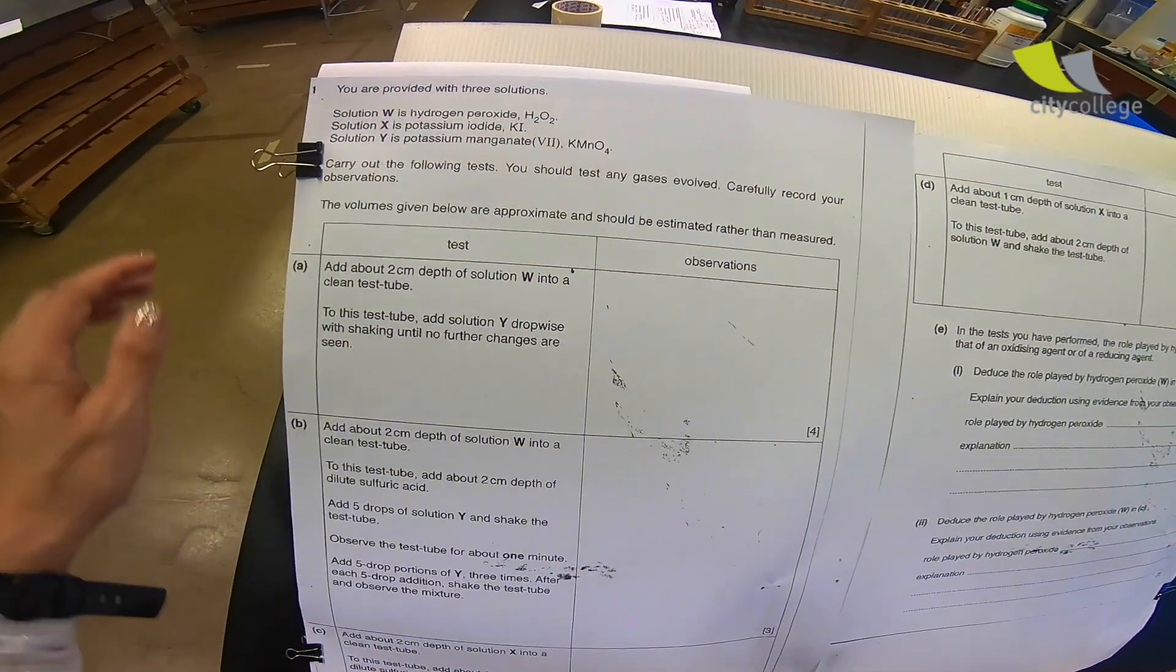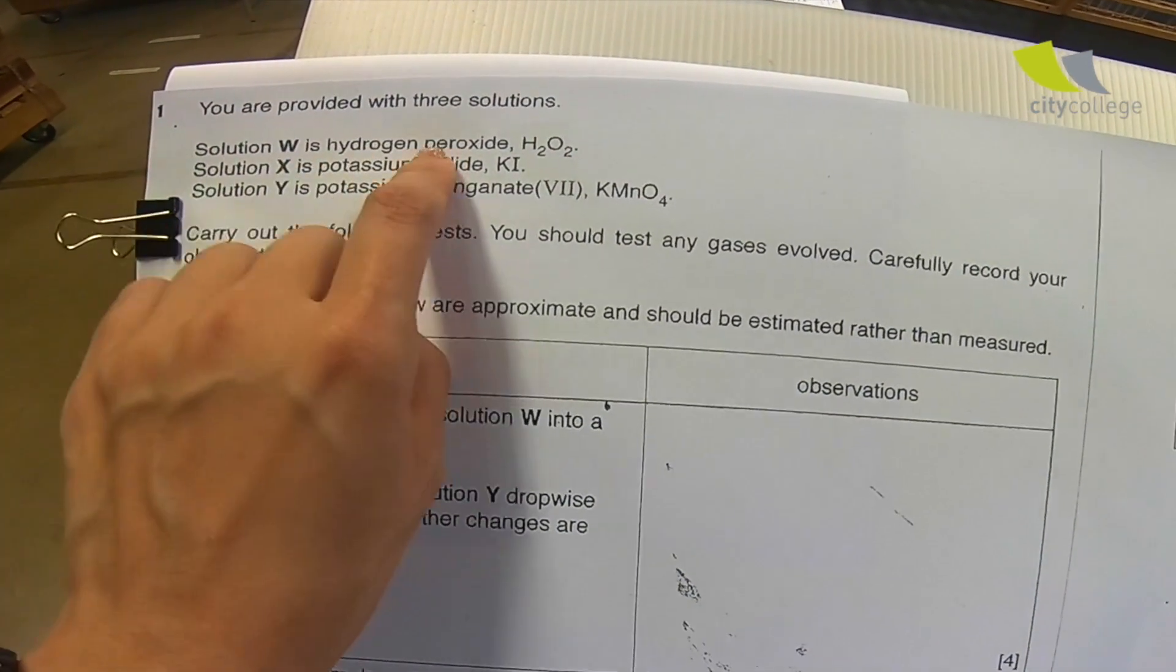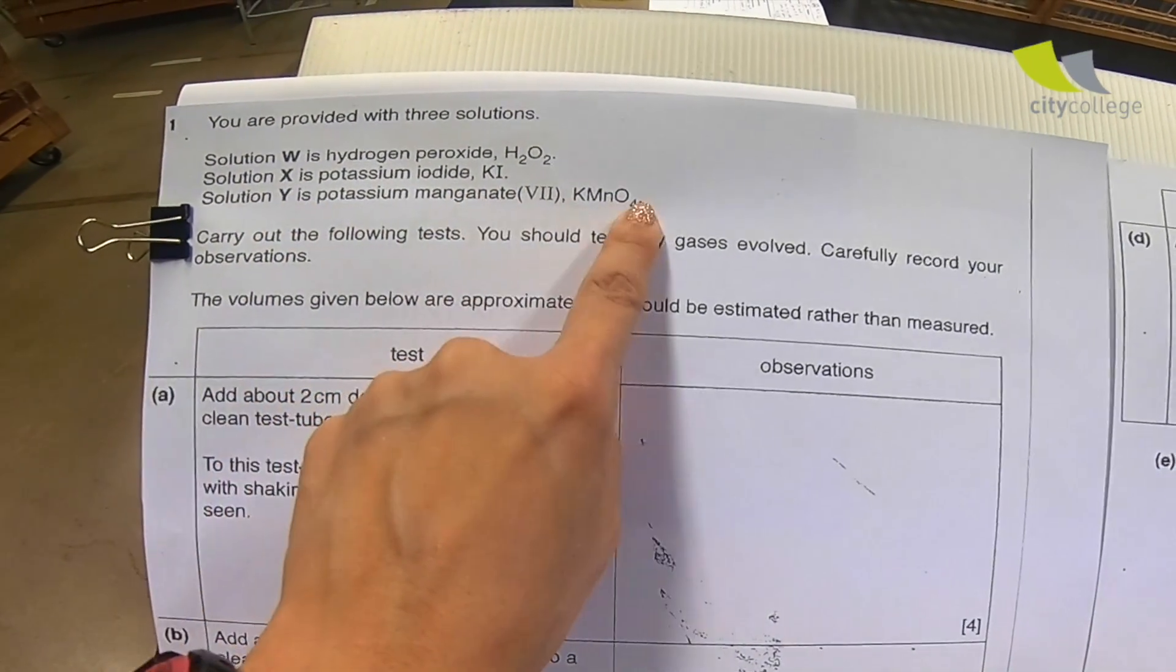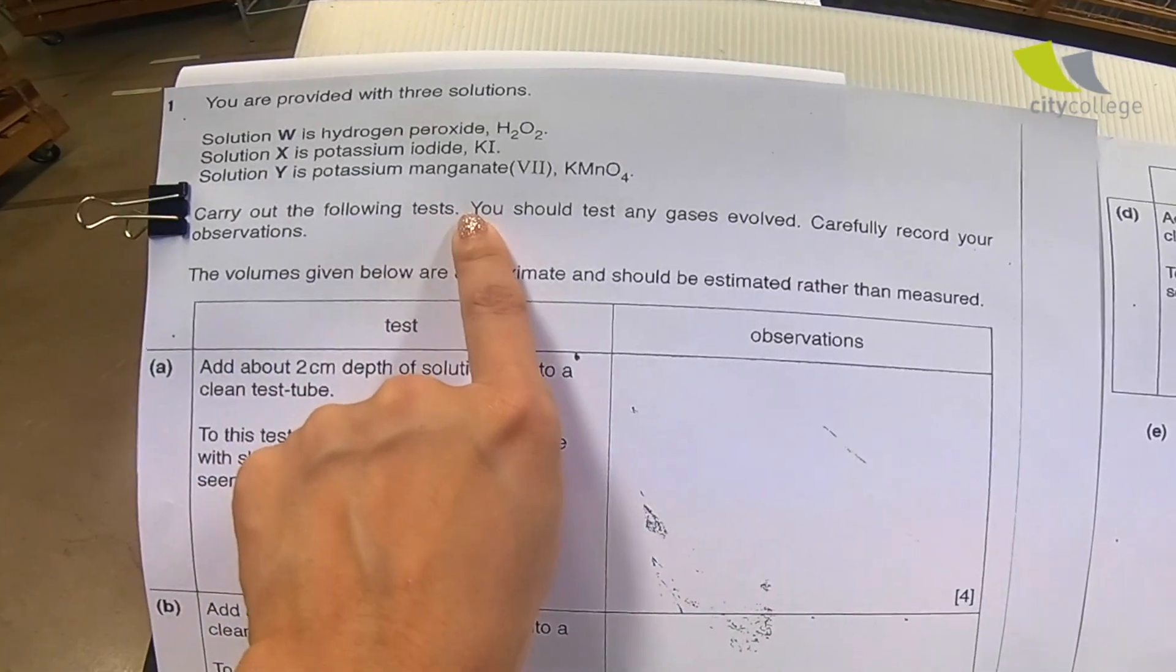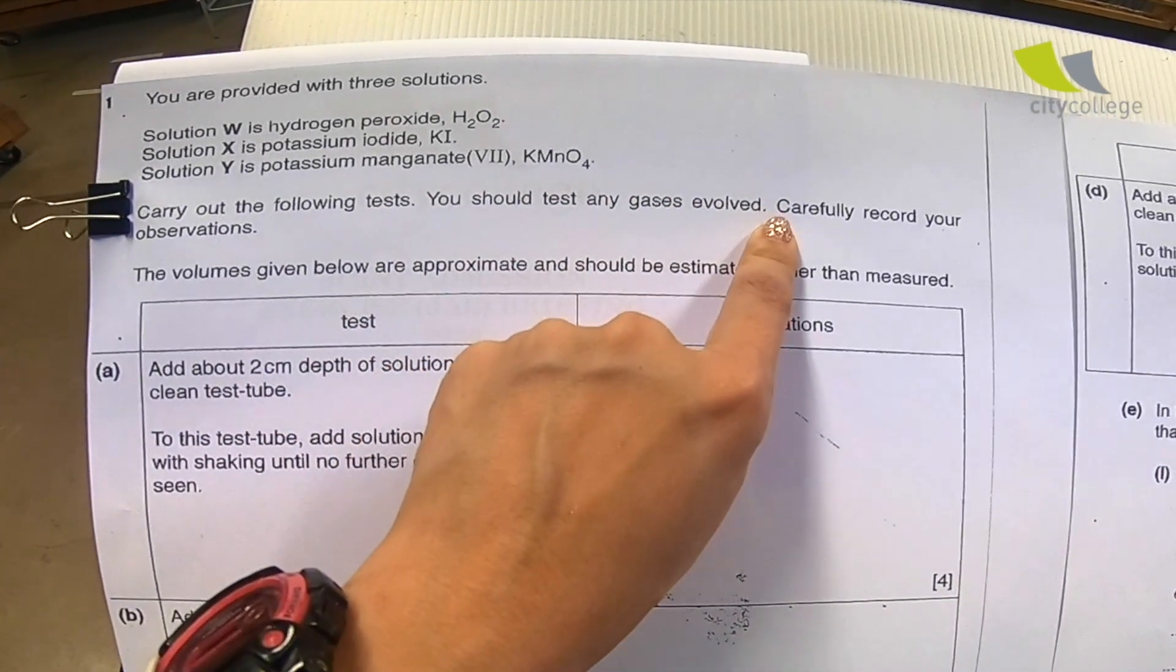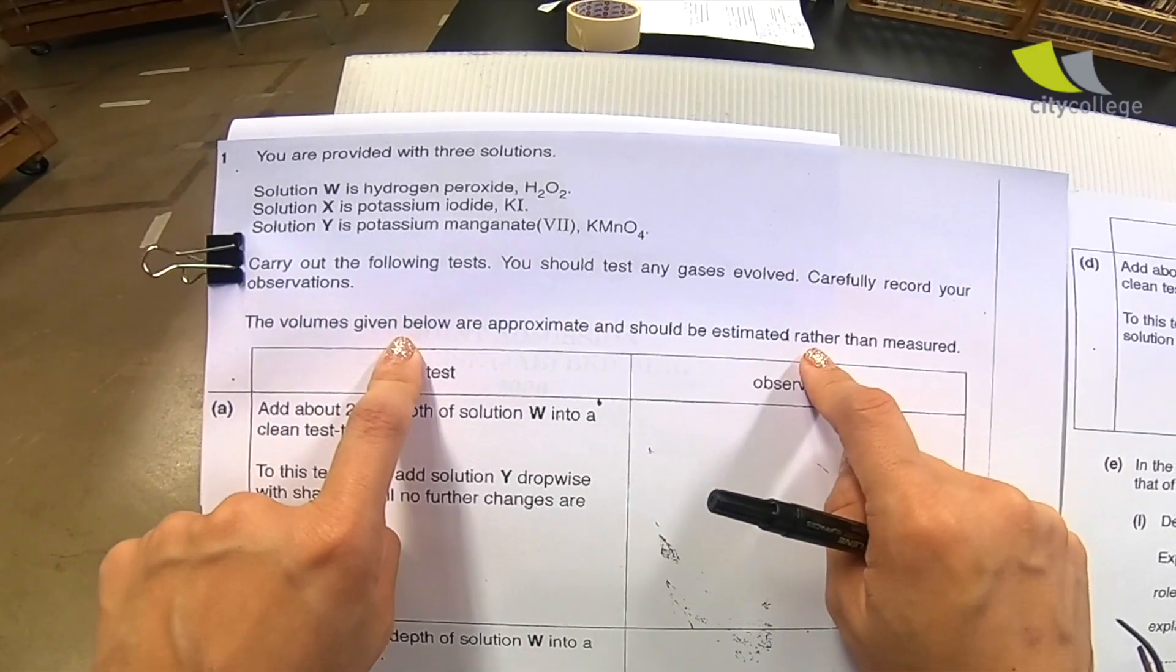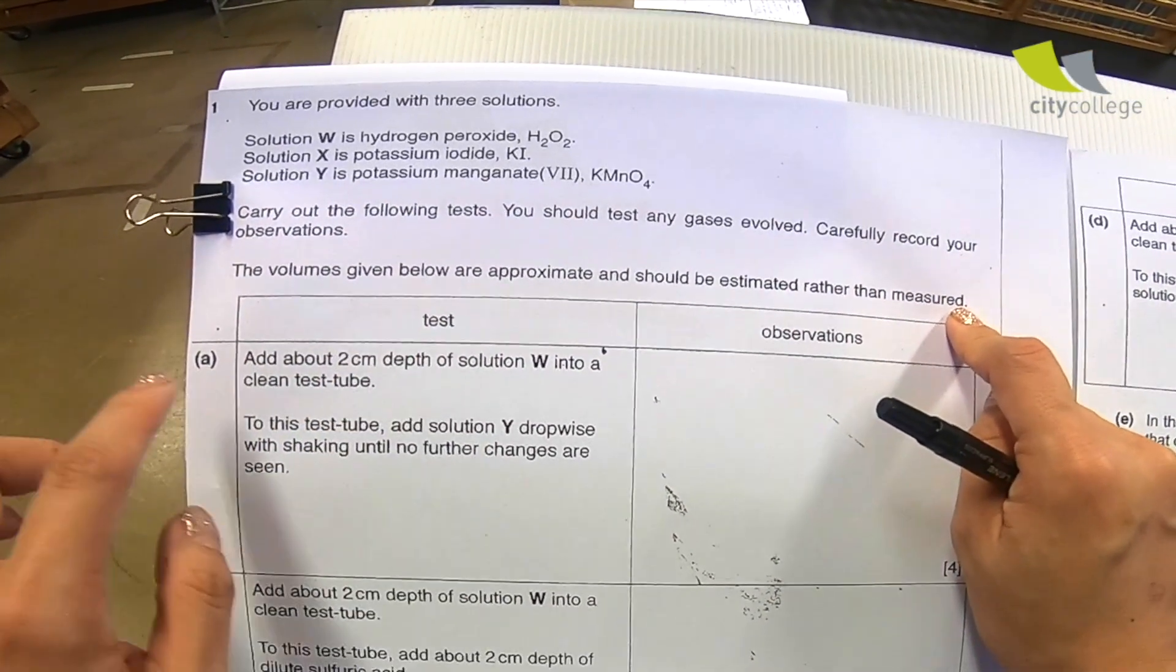You are provided with three solutions. Solution W is hydrogen peroxide and solution X is potassium iodide. Solution Y is potassium manganate. Carry out the following tests and you should test any gases if evolved. Carefully record your observation. The volume given below are approximate and should be estimated rather than measured.